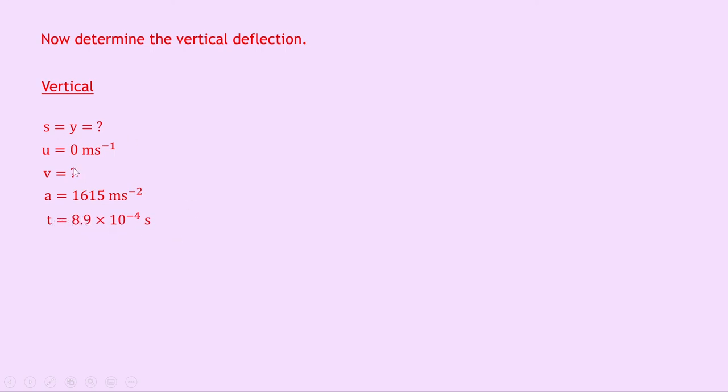So we now need to choose an equation of motion that does not have v in it, just like before. So writing down our equation, we have y equals ut plus a half at squared, just replacing the symbol s with y, because that's what we were given in the question.